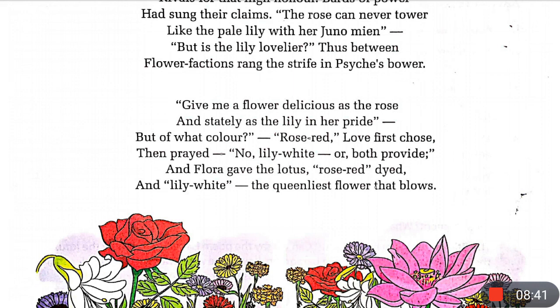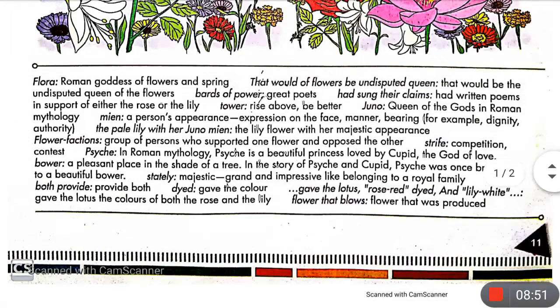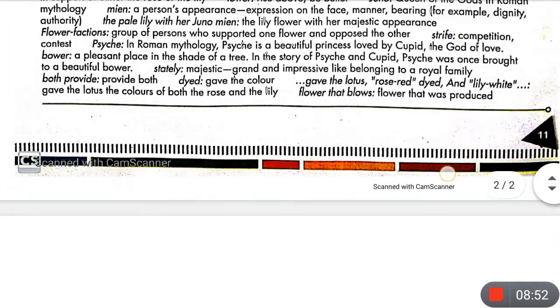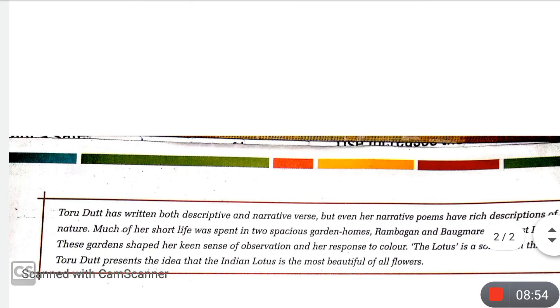'The queenliest flower that blows' — the lotus, combining both colors, red like the rose and white like the lily, was the most queenly flower of all that was blooming at that time.